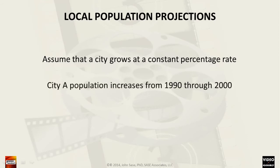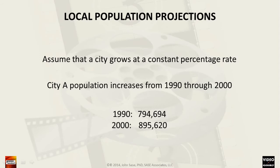For our example, let's assume that City Alpha had a population of 895,620 persons in the year 2000, and that this represents a notable increase over the 1990 population of 794,694.